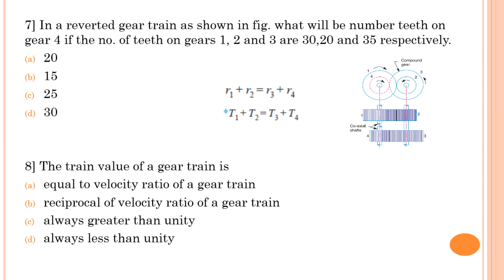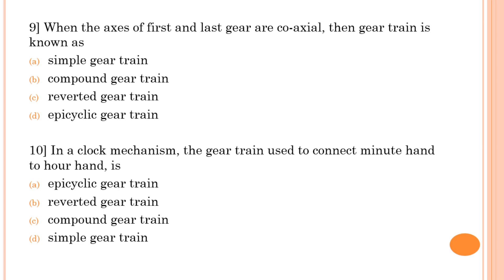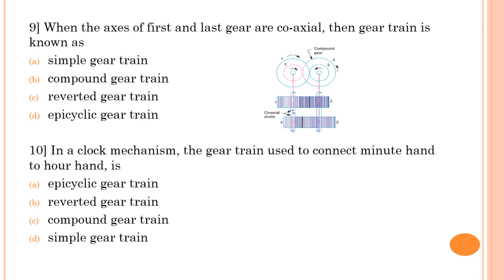Eighth question: the train value of a gear train is the reciprocal of the speed ratio. Speed ratio is velocity of driver divided by driven; train value is velocity of driven divided by driver — so yes, it is the reciprocal of the velocity ratio. Ninth question: when the axes of the first and last gear are coaxial, the gear train is known as a reverted gear train.